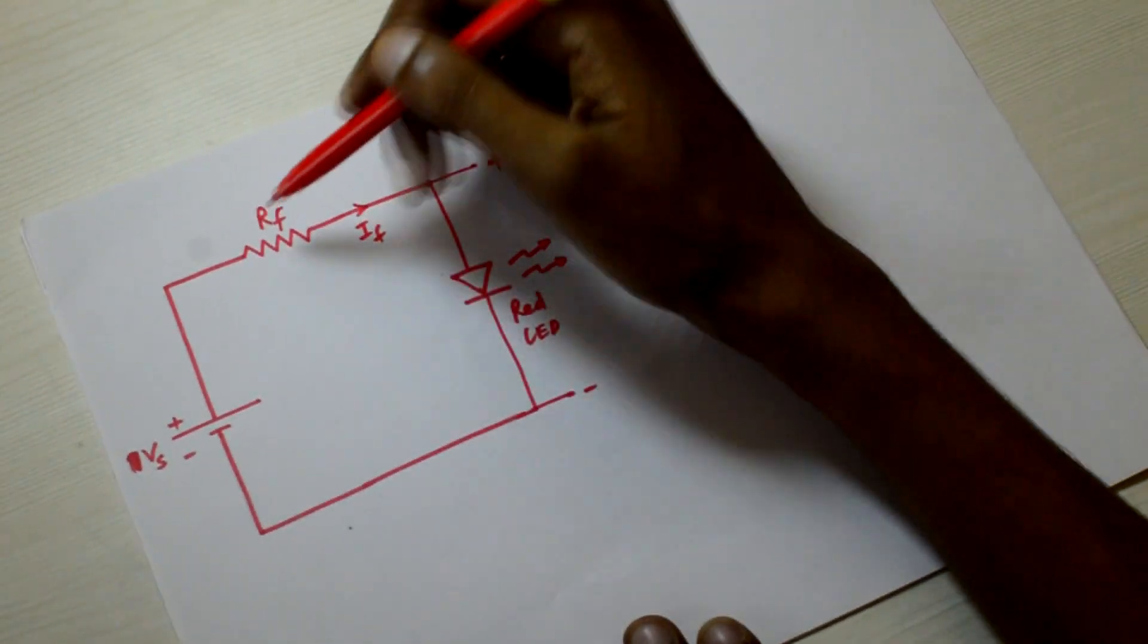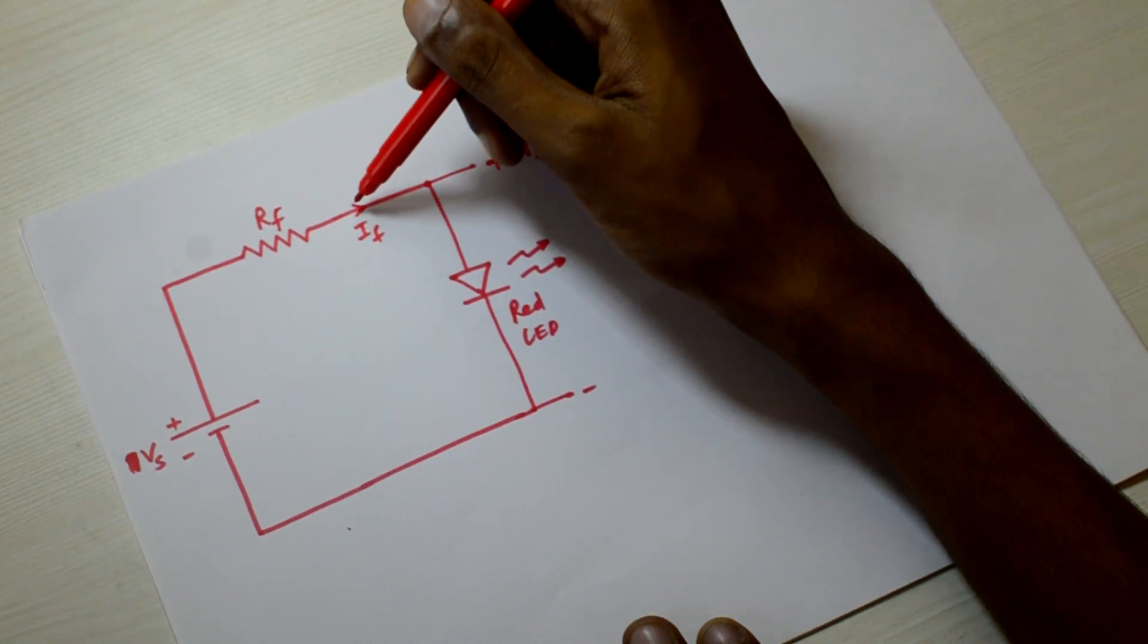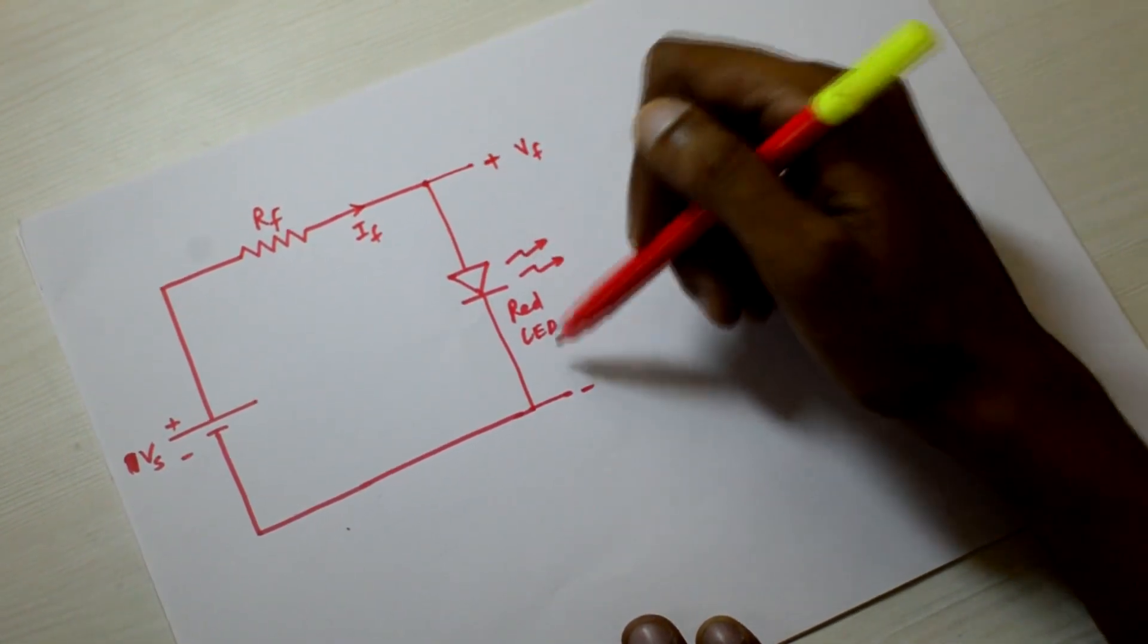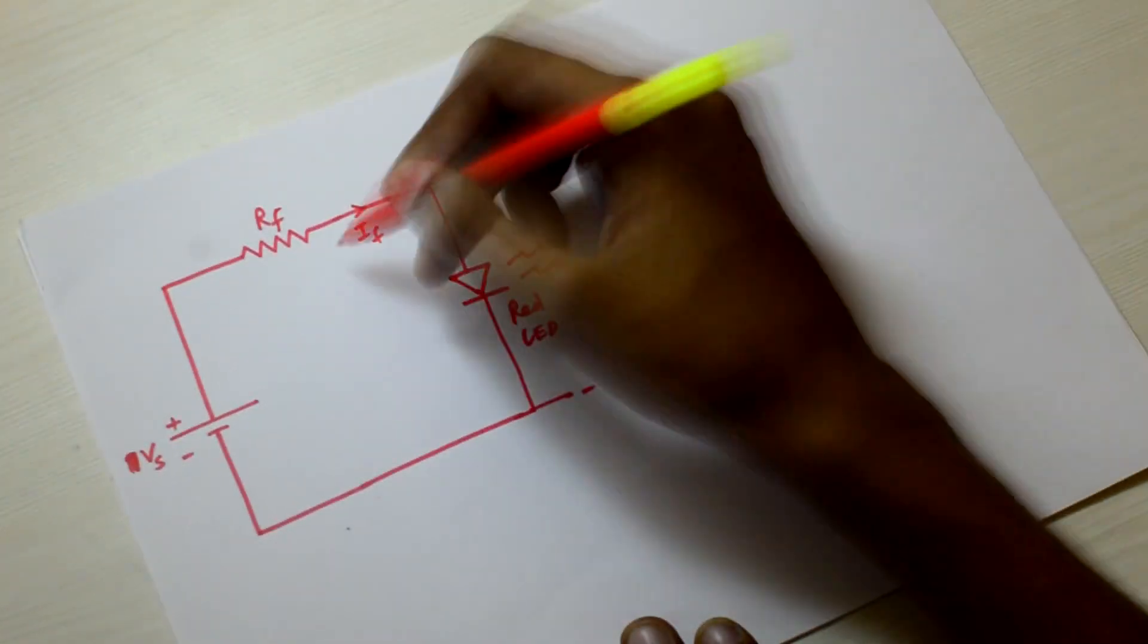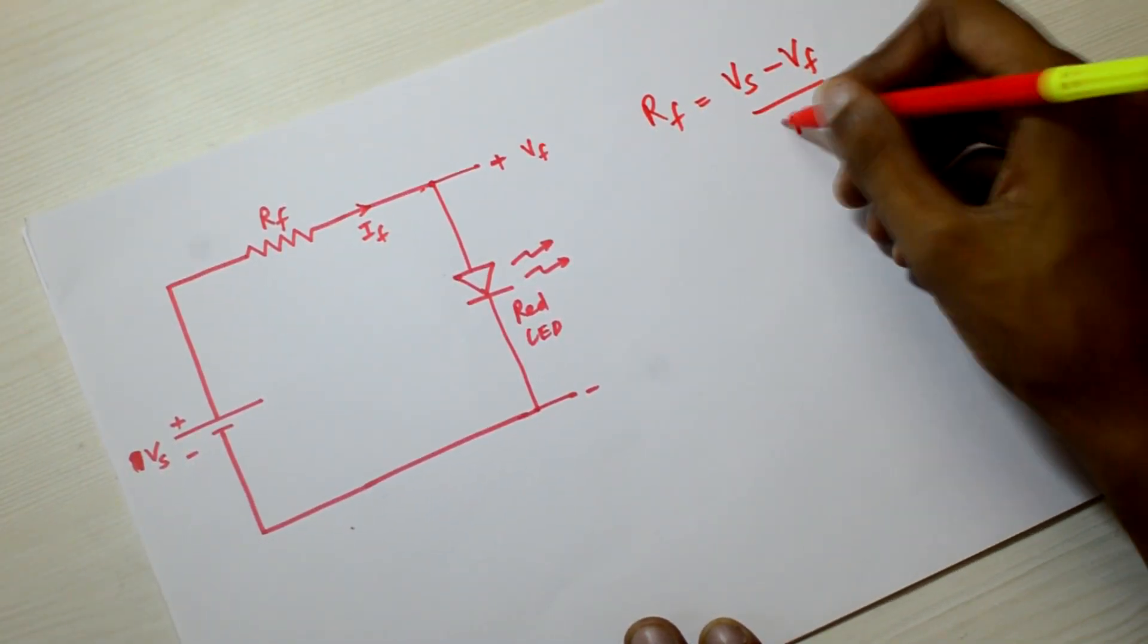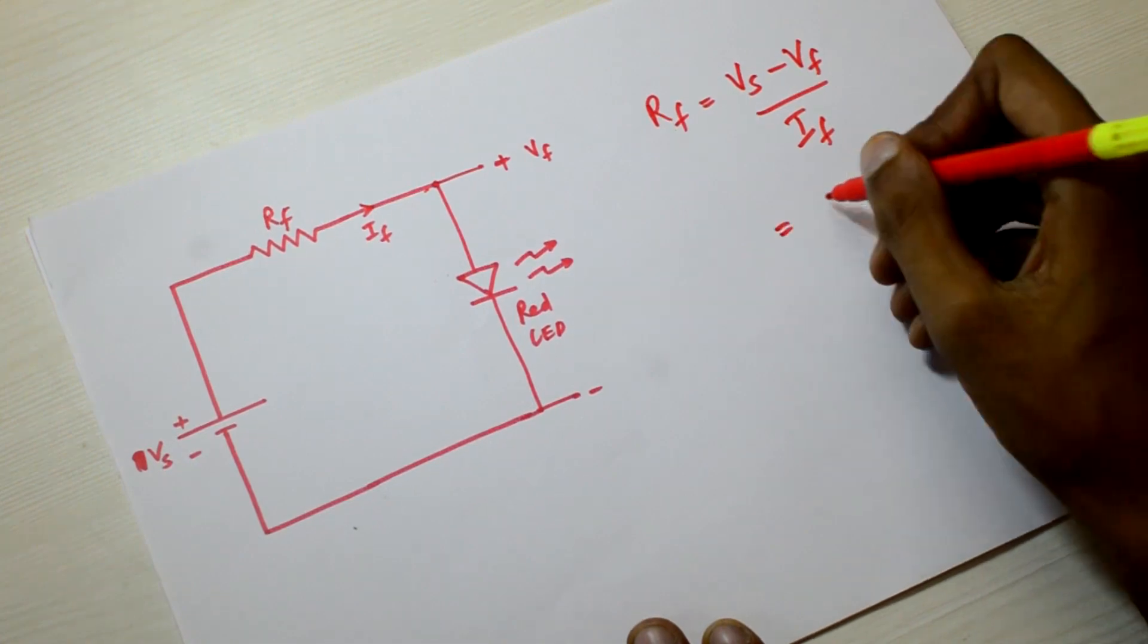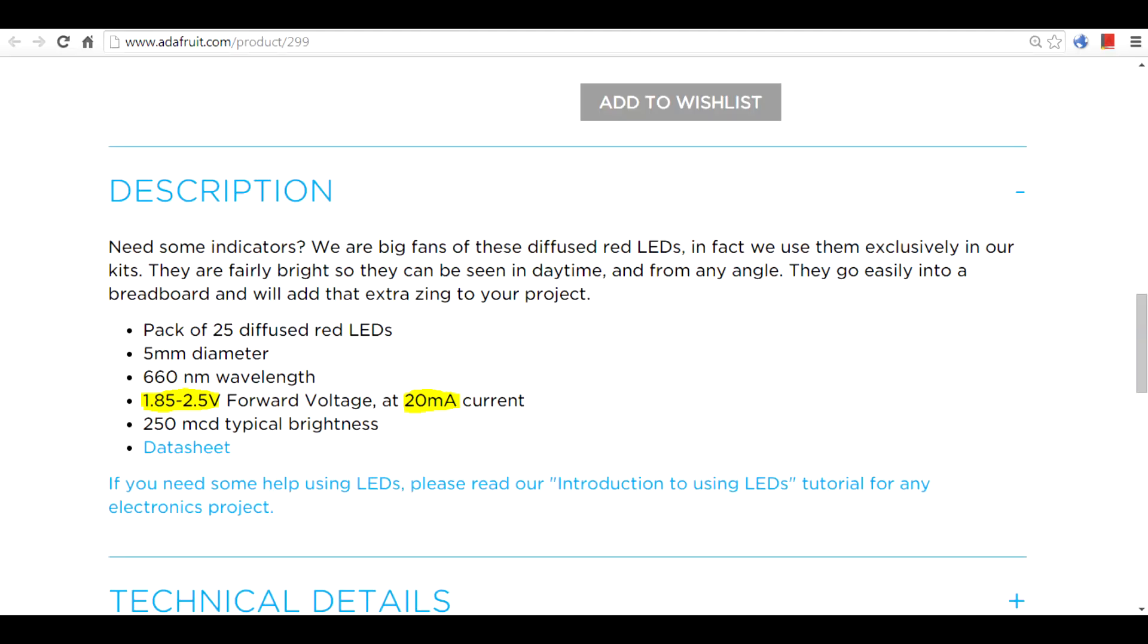Let us start writing the equations. Let us assume that the forward current in the circuit is IF and the forward voltage is VF. From this circuit we can see that RF equals VS minus VF divided by the current IF. As we are using a 9 volt battery, VS is 9 volts. The values of VF and IF can be found from the datasheet of the LED.